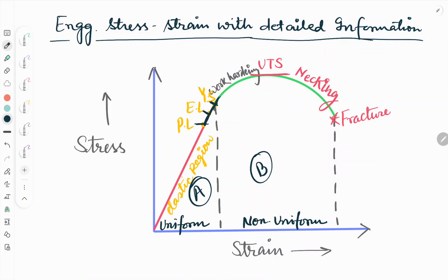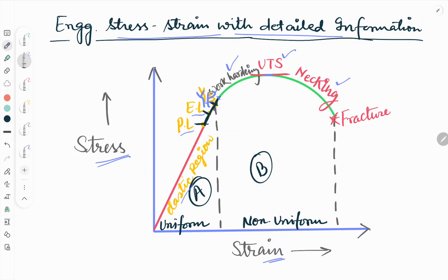Hello friends, welcome to our YouTube channel Metallurgical Engineering. Today in this video we will see detailed information about the engineering stress-strain diagram. Stress is on the y-axis and strain on the x-axis. We will see every term here: the elastic region, PL that is proportionality limit, EL elastic limit, YS that is yield strength or yield point, work hardening, maximum load point that is UTS ultimate tensile strength, necking, and then fracture.